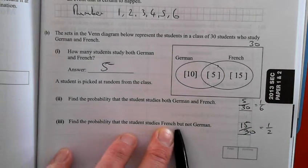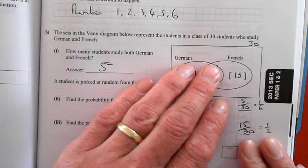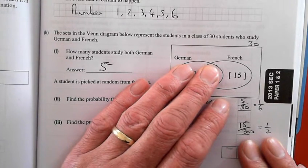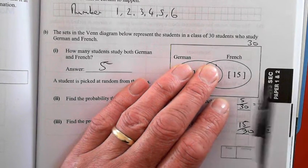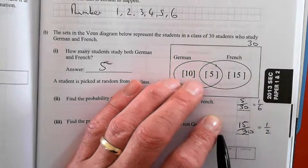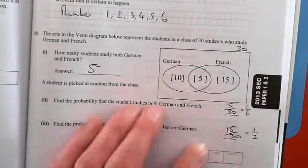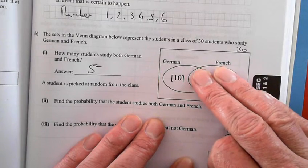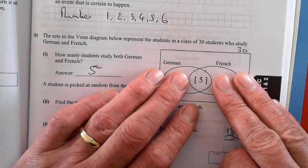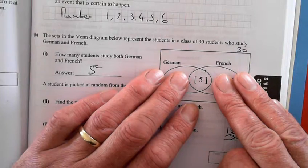Find the probability the student studies French but not German. That sector there. French but not German is 15 over 30. This is German but not French. This is both of them: 5 over 30.